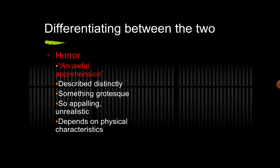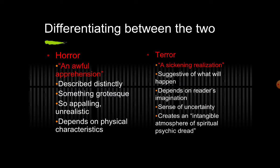Horror is an awful apprehension described as something grotesque and vague — unknown — and appeals to unrealistic, physical characteristics. Terror, on the other hand, is a sickening realization; it is suggestive of what will happen, depends on the reader's imagination and sense of uncertainty, and creates an intangible atmosphere of spiritual and psychic dread, making you feel frightened and unstable.